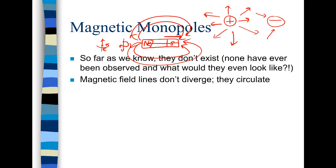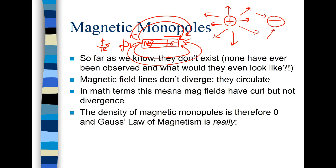And in math terms what this means is that magnetic fields have curl but not divergence. And so really what happens is that the density of magnetic monopoles is really zero. So Gauss's law of magnetism is this: that on a closed surface the integral of B dot dA is zero.